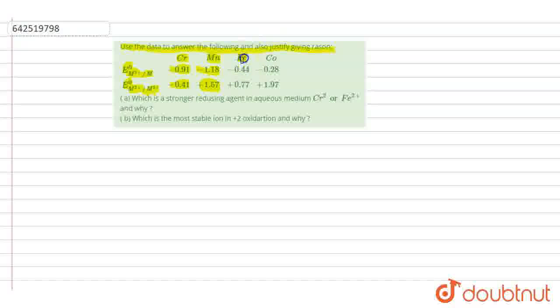Similarly, for iron, it's minus 0.44 and plus 0.77. Next we have cobalt with minus 0.28 for M²⁺/M and plus 1.97 for M³⁺ to M²⁺.